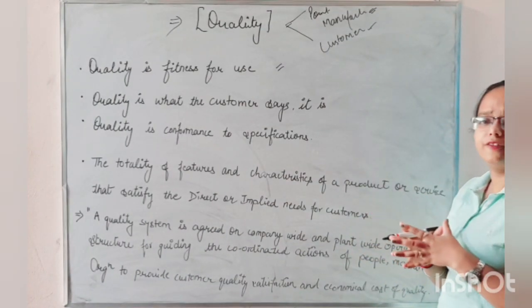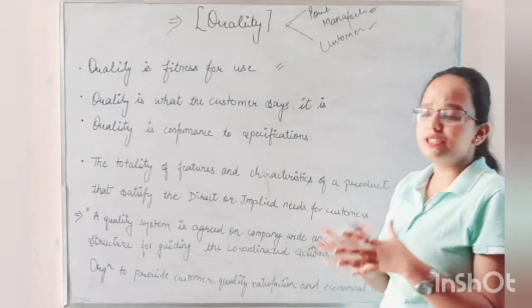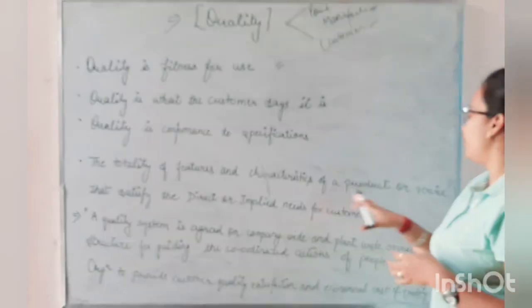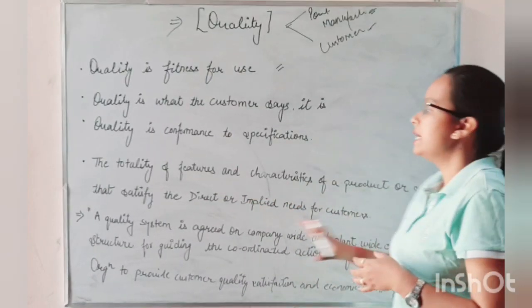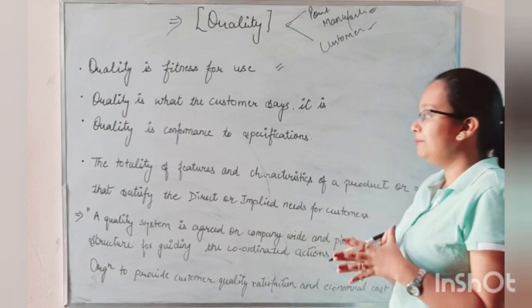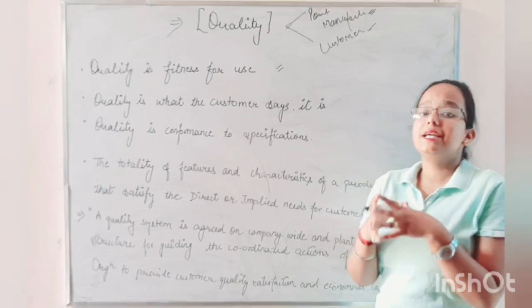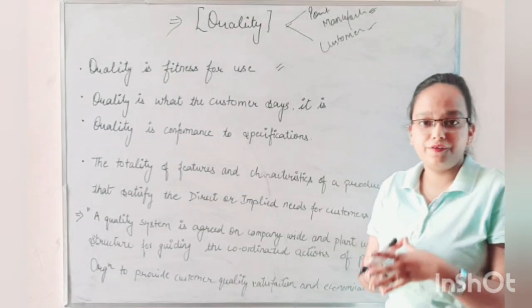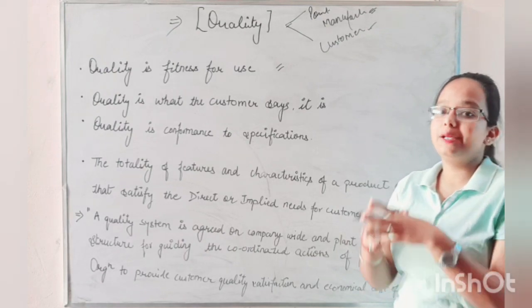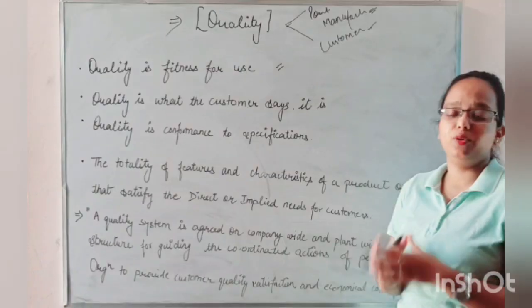If I talk about a combined definition of quality: basically, quality is the totality of features and characteristics of a product or service that satisfy the direct and implied needs of the customer. It means that all the features and characteristics of a product or service that meet the customer's direct and implied needs — all those things are quality oriented.